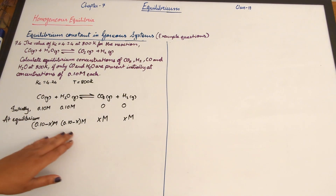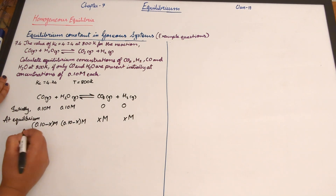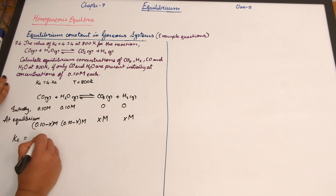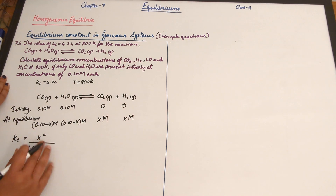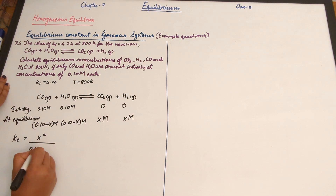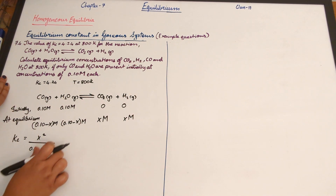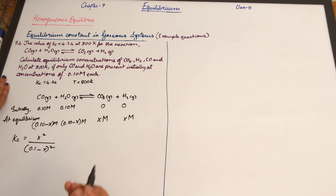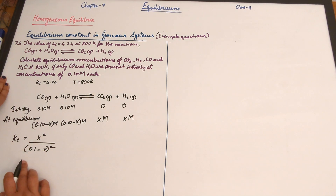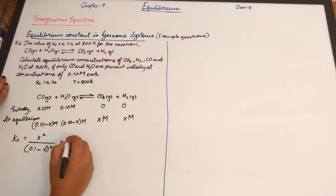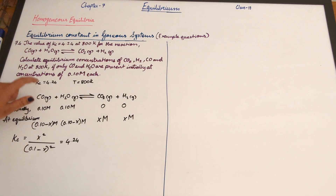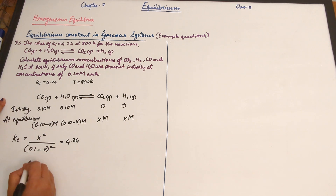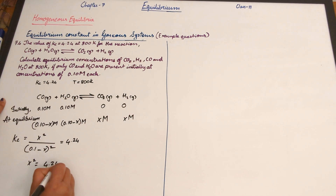We know the concentrations in terms of x, and we write the equation: Kc equals the concentration of products squared divided by reactants squared — that is, x² divided by (0.1 minus x)² equals 4.24. This equation involves a quadratic expression.